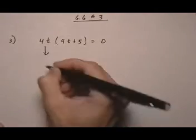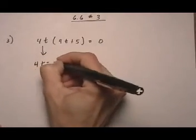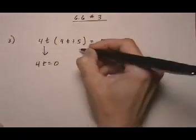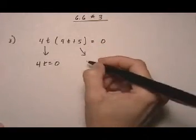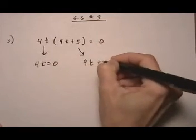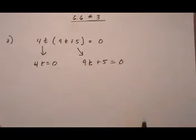So we take the first factor, 4t, set it equal to 0. And then we solve for t. And then we do the second factor, 9t plus 5, set it equal to 0.